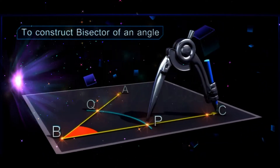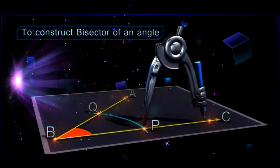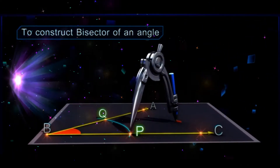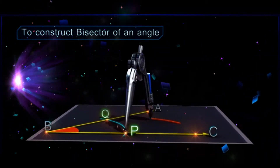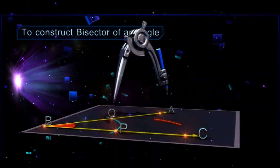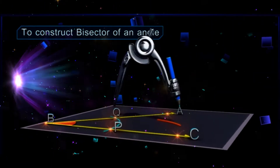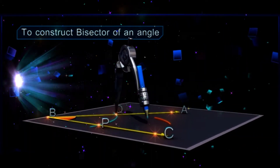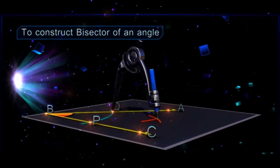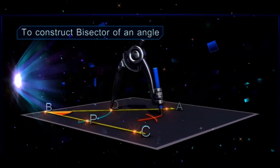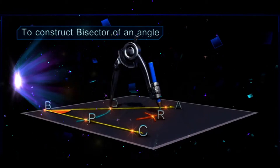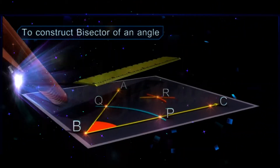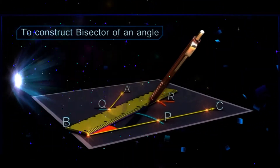With P as center and any convenient radius more than half of PQ, draw an arc in the interior of the angle. With Q as center and the same radius, draw an arc intersecting the arc drawn earlier at R.